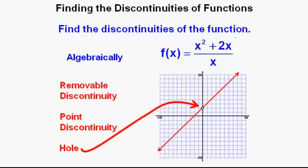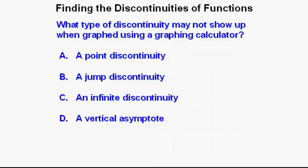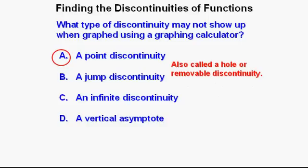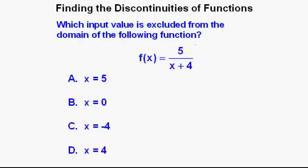Problem: What type of discontinuity may not show up when graphed using a graphing calculator? Stop the video, solve, then restart to check. The correct answer is A — a point discontinuity, which can also be called a hole or a removable discontinuity.